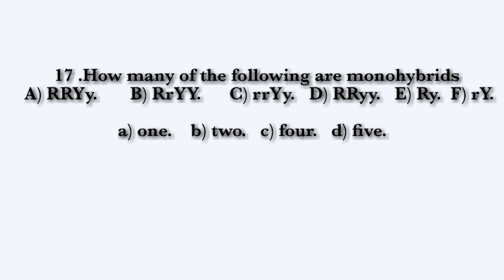How many of the following are monohybrids? Monohybrid means heterozygous for genes controlling one character. RRYY — monohybrid; RRYy — monohybrid; the third one — monohybrid; D is not a monohybrid, it is homozygous; E — monohybrid; F — monohybrid. So there are a total of 5 monohybrids. The right option is option B: 4 — wait, total 5 monohybrids are there.